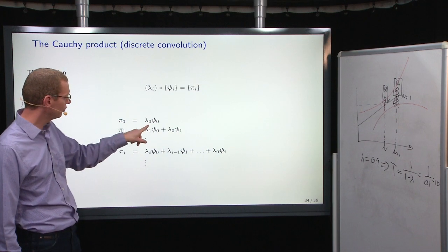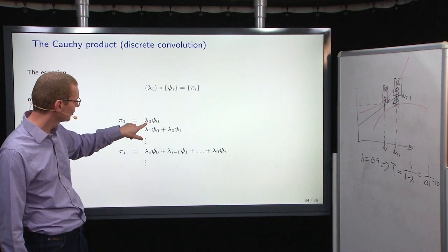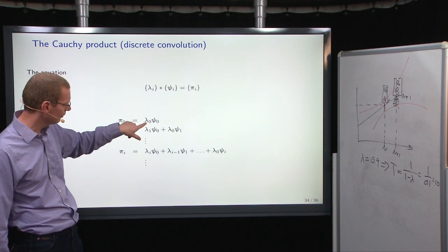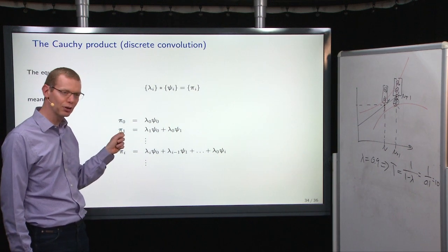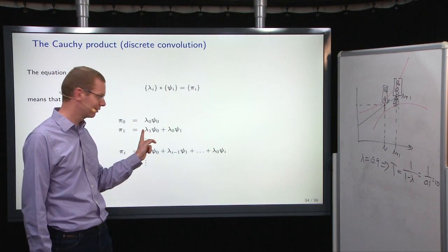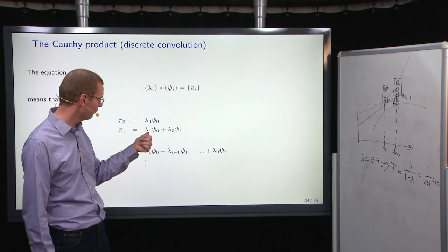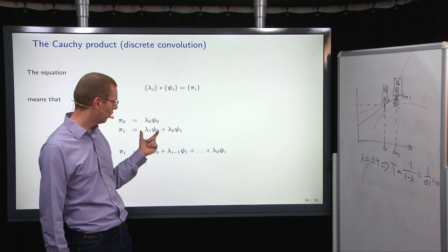Well, we have to take everything where we can add the powers to be zero. So that's lambda_0 and phi_0. Now, to get the first order here, we can take either lambda at first power of B, but then you need to have psi at zero power, or you can do the reverse.